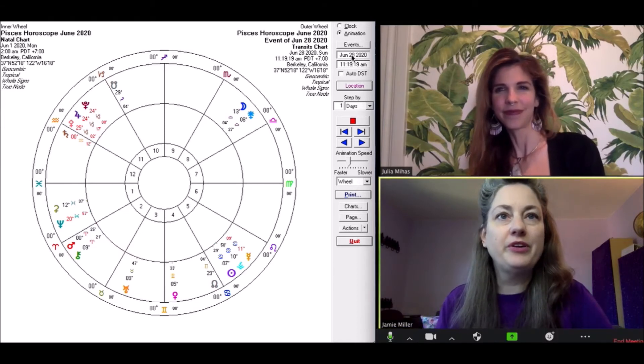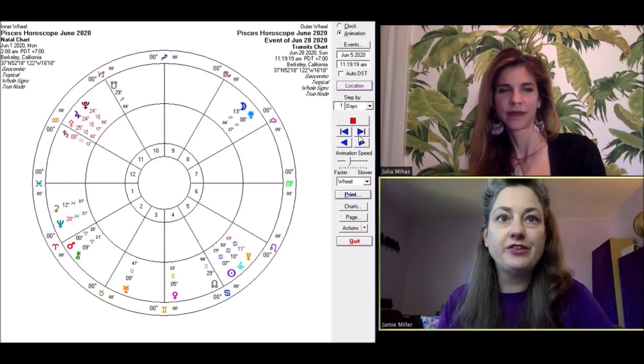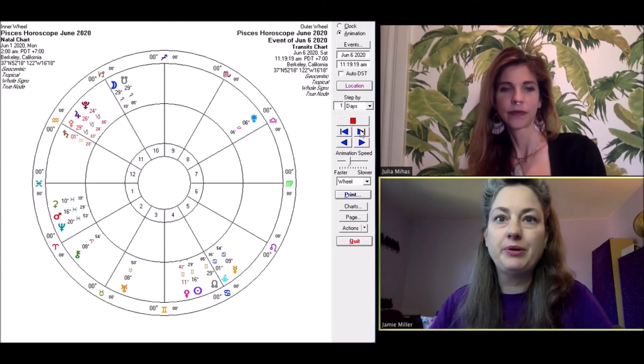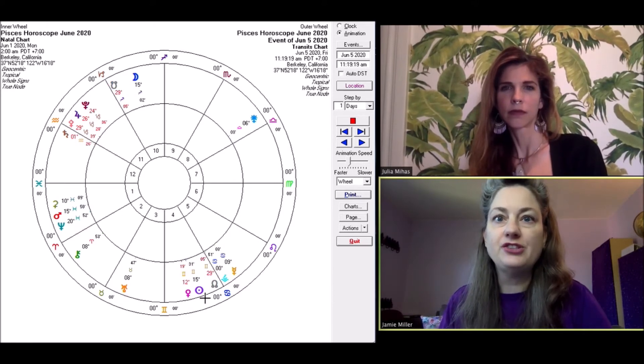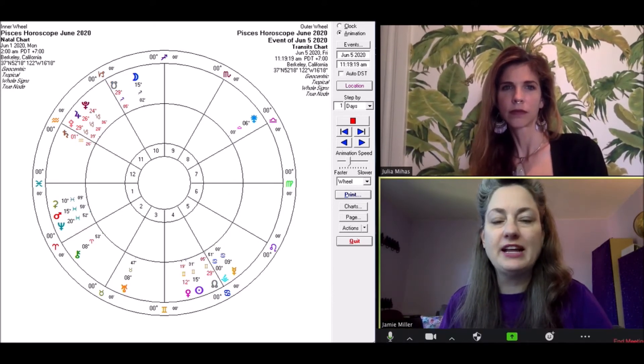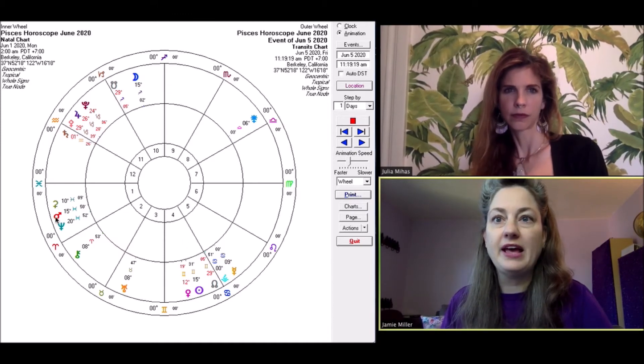So true. So we have a couple of eclipses this month. We have the first one coming up at the beginning of June on the 5th and 6th. And that shows the moon falling in your 10th house of career and the sun here in your 4th and Mars is squaring it from your first house.